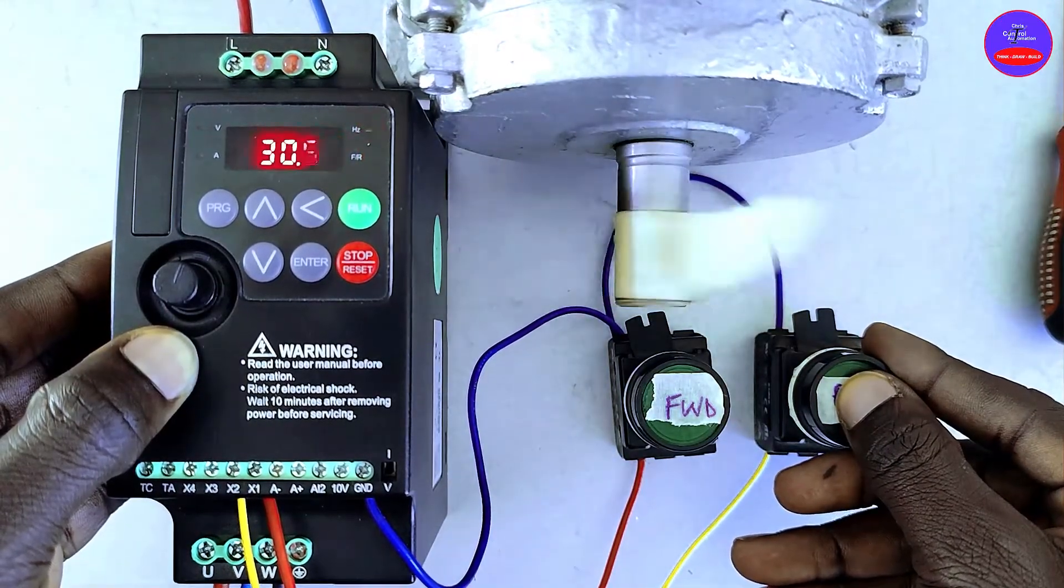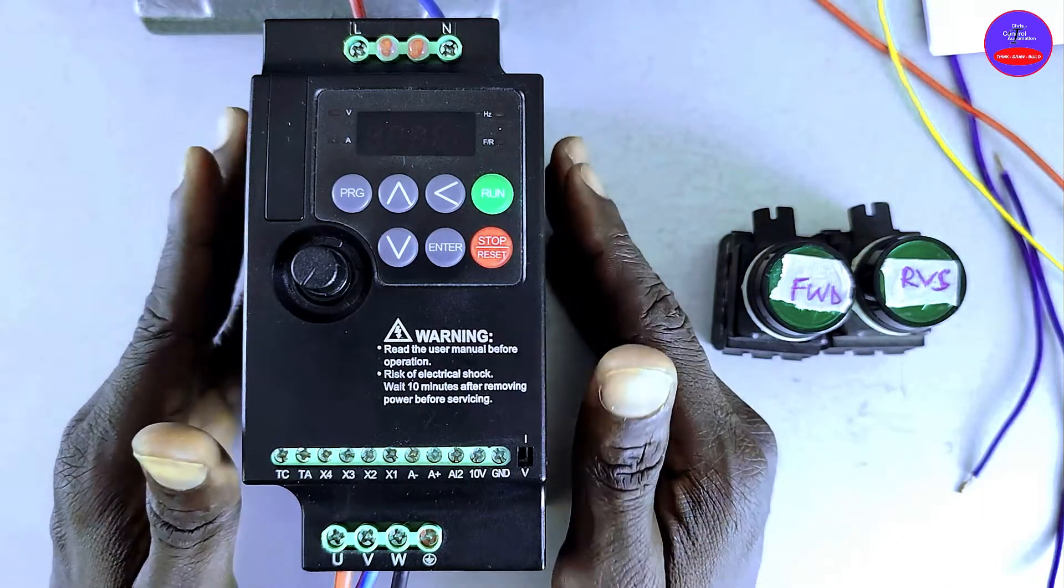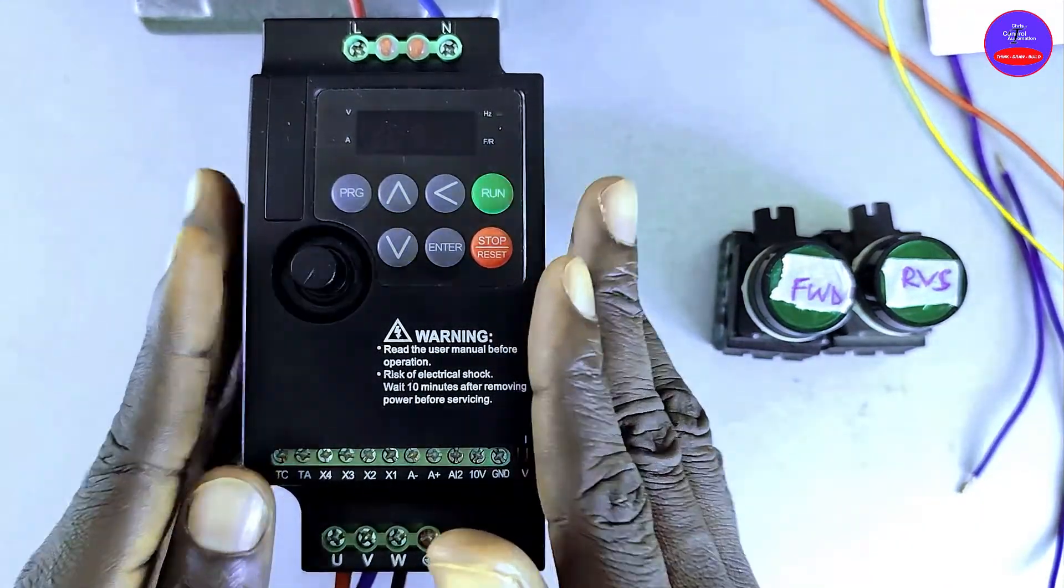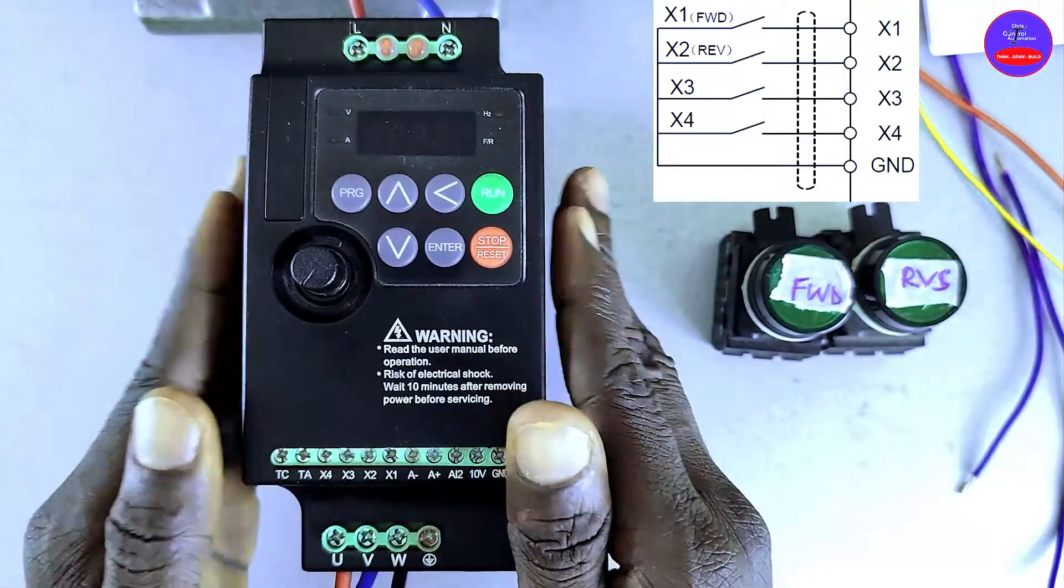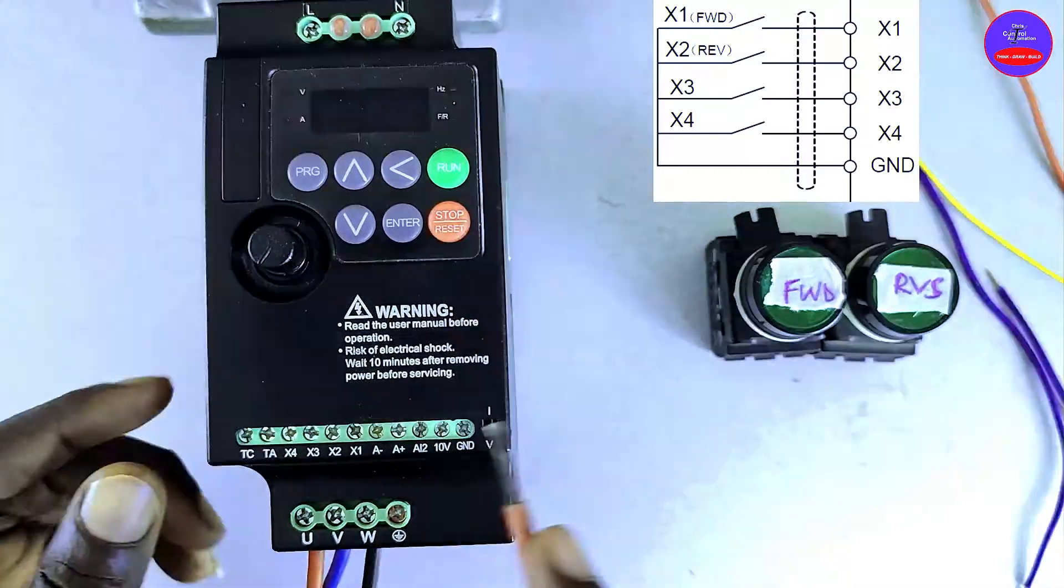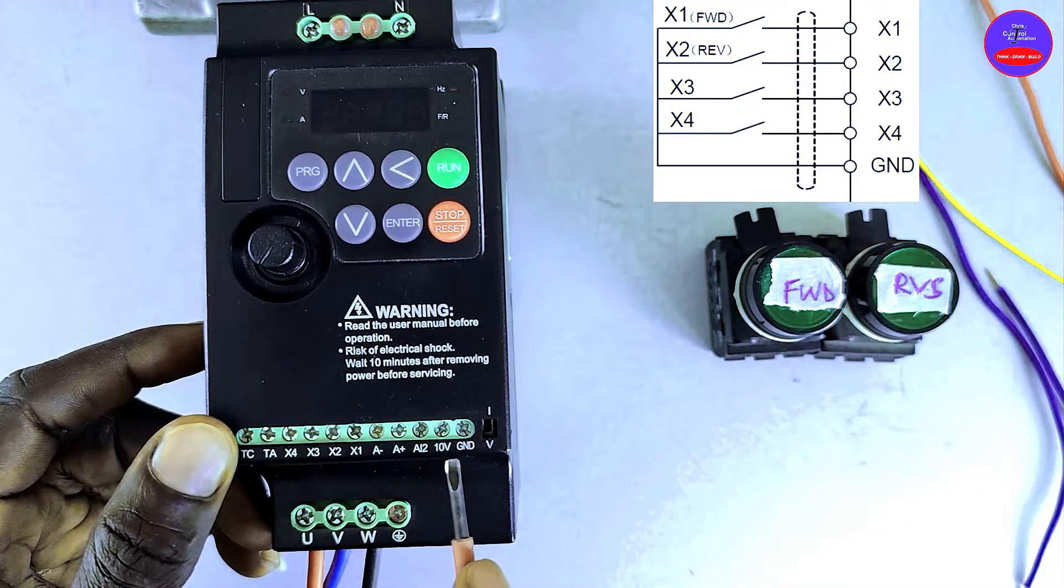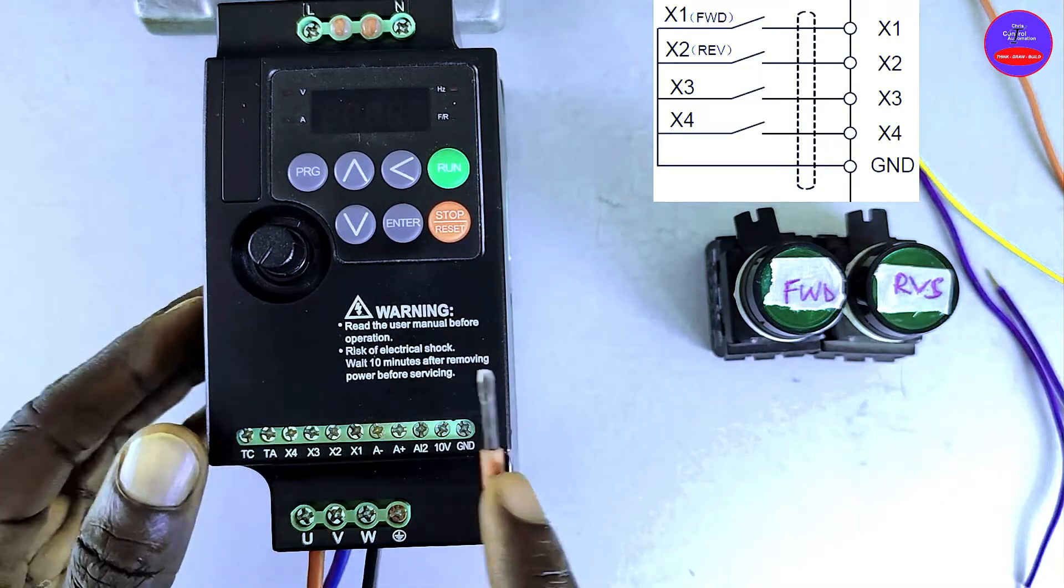Drives receive negative digital signal or positive digital signal to operate. This particular drive receives negative digital signal to operate. The drive has 10 volt output and ground. We are going to use this ground to operate the drive.